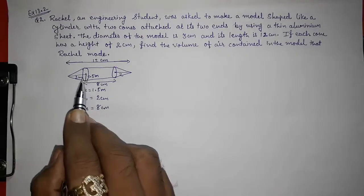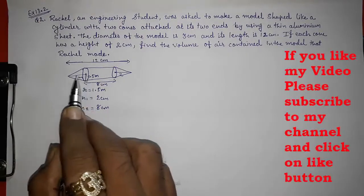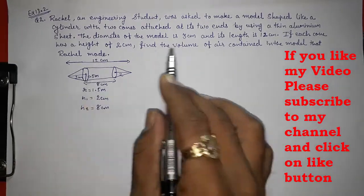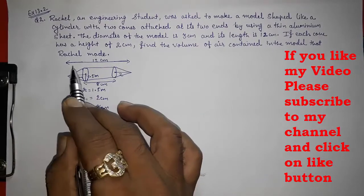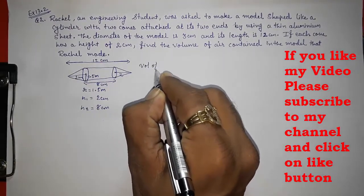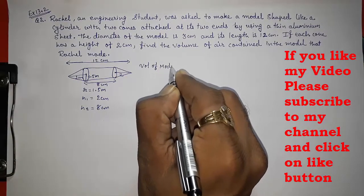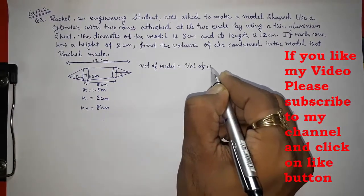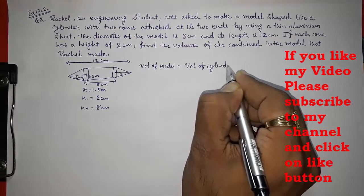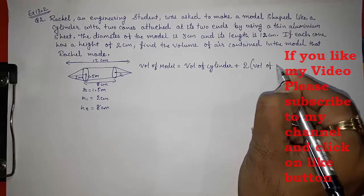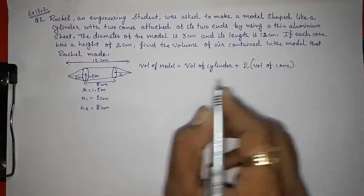Now we got radius and height of this cone also. We got radius and height of this cylinder also. Now, they told us to find the volume of this whole model. So volume of model is equal to volume of cylinder plus 2 volume of cone. Because we are having 2 cones.